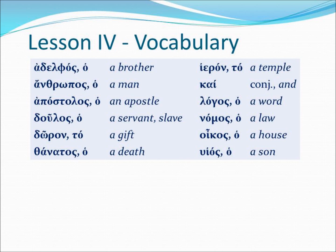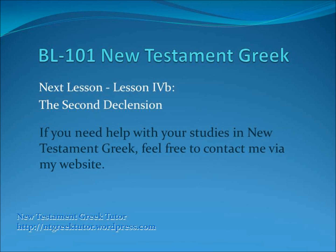So this is our entire list of vocabulary words for Lesson 4. Go back over the words carefully if you need to — rewind this lesson, listen to the words carefully, and learn how to spell and pronounce them. Also recognize whether they are masculine or neuter. This is going to be important to you. If you have any questions, don't hesitate to email me. This concludes BL101 New Testament Greek Lesson 4A Vocabulary.